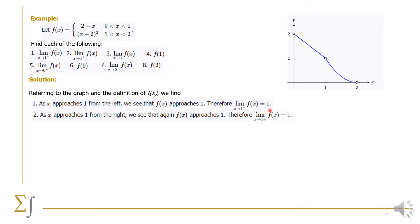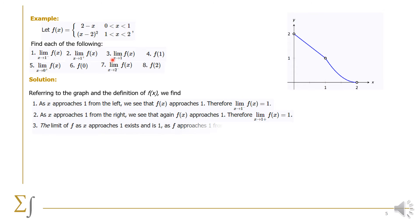For question 2: the limit of f(x) as x goes to 1 from the right. Getting closer and closer to 1 from the right, the function also approaches 1. The limit from the left and the limit from the right both go to the same quantity. So by the theorem, the limit exists and is equal to 1. Both right and left limits are equal to 1, therefore the limit of f(x) as x goes to 1 is 1.